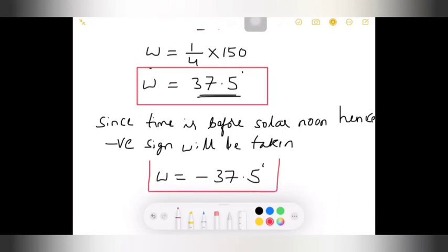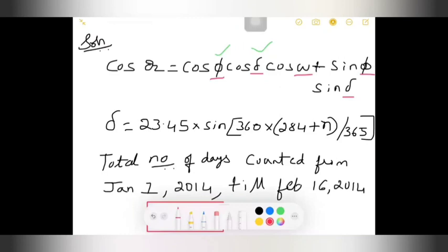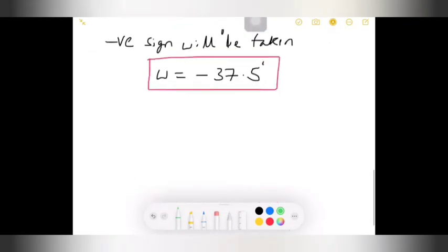Therefore, W is equal to minus 37.5 degrees. I am taking this one minus 37.5 degrees because it is before 12 noon. Now all the unknowns are determined here. W is also known. I can substitute those values in that cos theta z formula, then I can determine it. I'll write that formula once again.